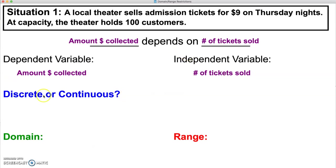Because we can't sell half a ticket, or we won't have any values in between our integer values, this situation is discrete.